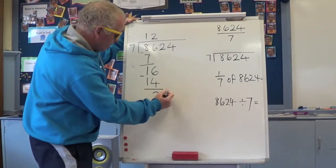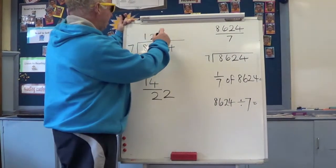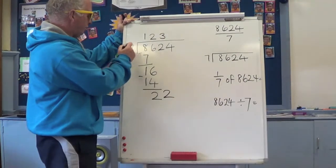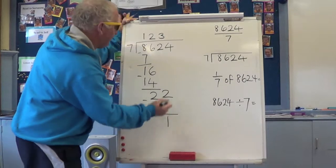Bring down the tens. 22 tens shared into 7 groups. They get 3 tens each. 3 tens multiplied by 7 is 21 tens. Take it away. We've got one ten left.